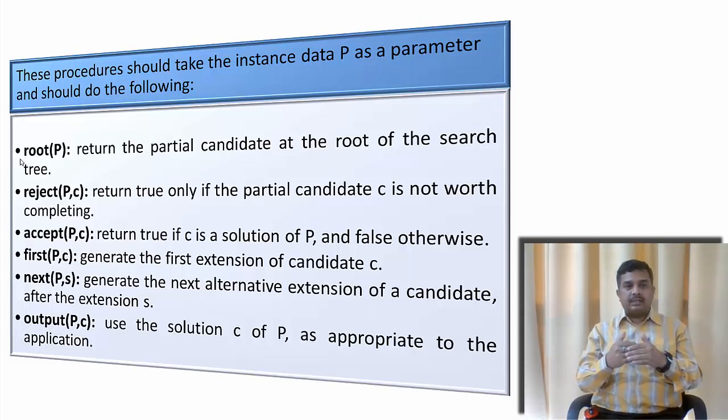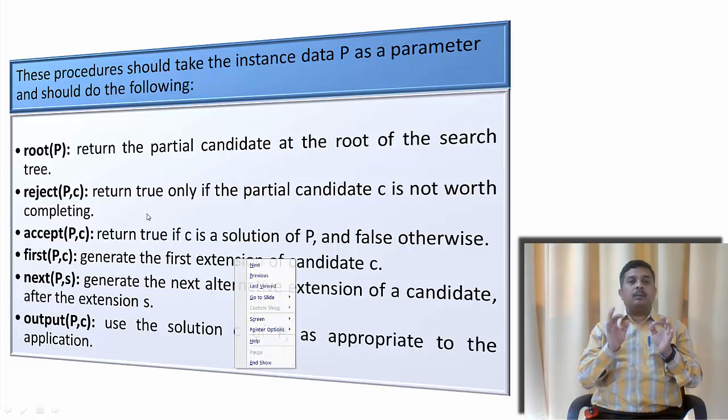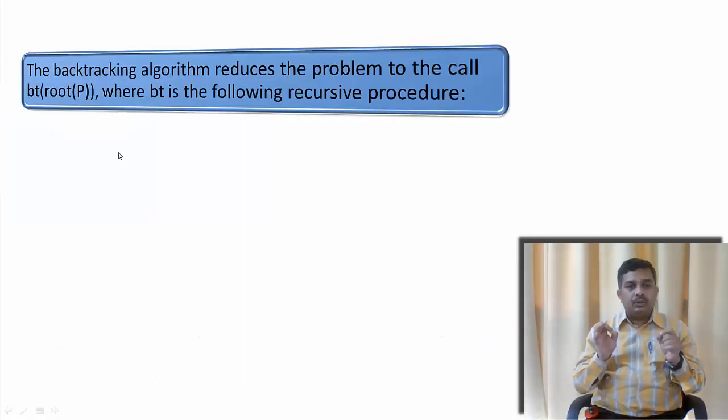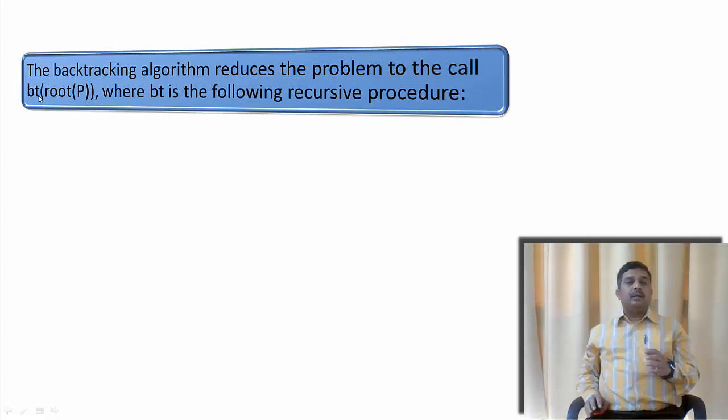First p, c will generate the first extension of the candidate c. Next p, s generates the next iterative extension of the candidate after the extension s. And output p, c uses the solution c of p as appropriate to application.